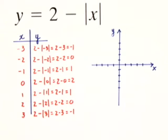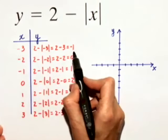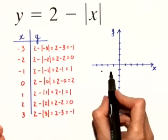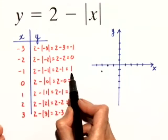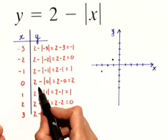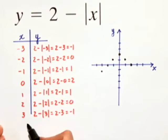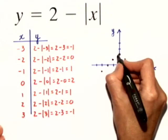Now it's going to make a lot more sense when we plot these ordered pairs. When x is negative 3, our y coordinate was negative 1, so we plot negative 3, negative 1. When x is negative 2, y is 0, so we plot negative 2, 0. When x is negative 1, y is 1, so we go negative 1, 1. When x is 0, y is 2, so 0, 2. When x equals 1, the y coordinate is 1. When x equals 2, the y coordinate is 0. And finally, when x equals 3, the y coordinate is negative 1.